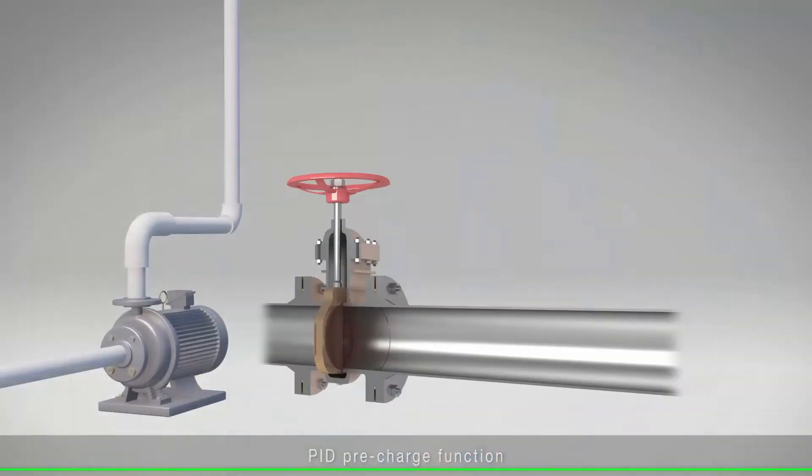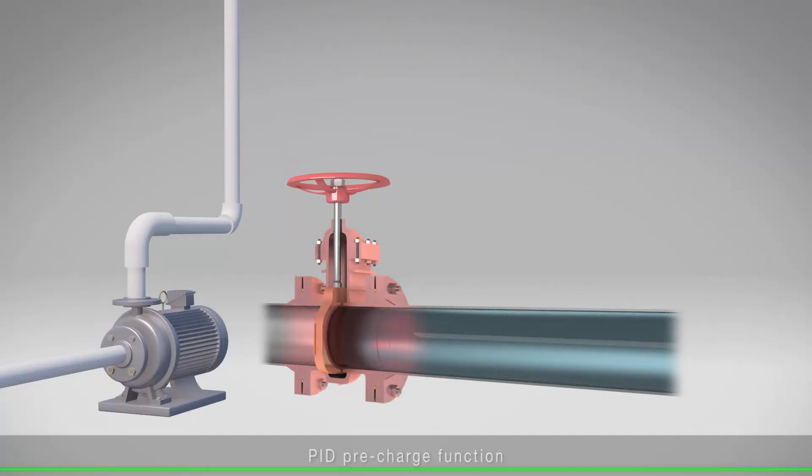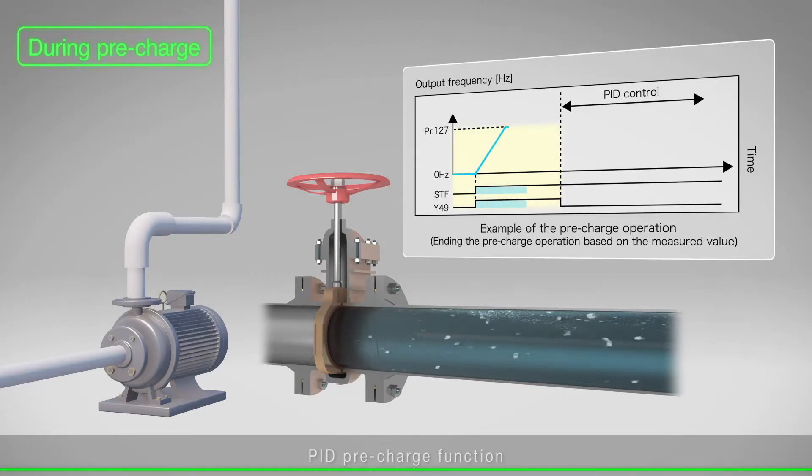With the PID pre-charge function, when water supply to the empty pipe is started, rapid acceleration and deceleration of the pump can be avoided to prevent water hammer action.